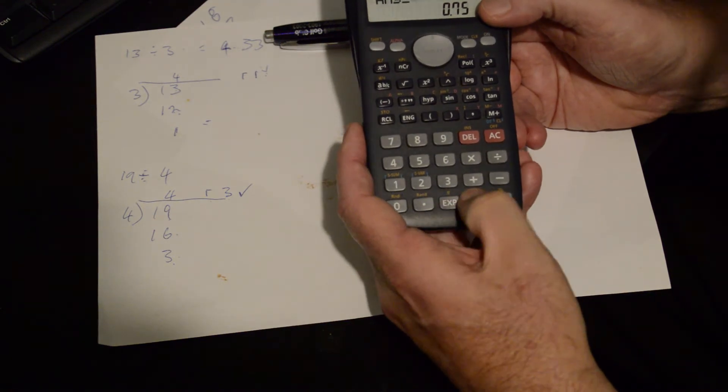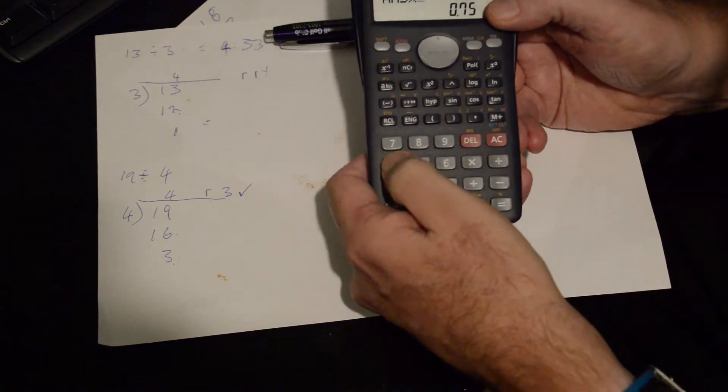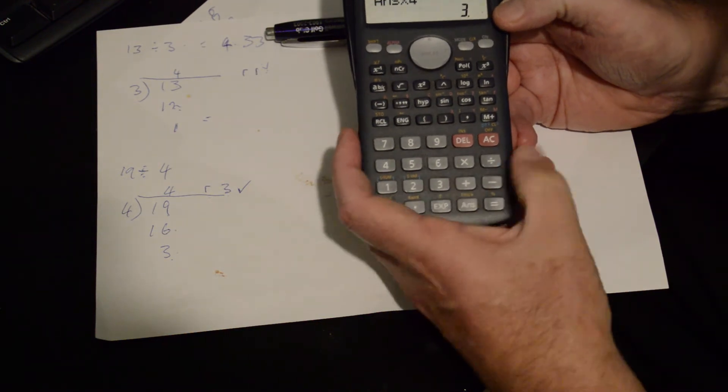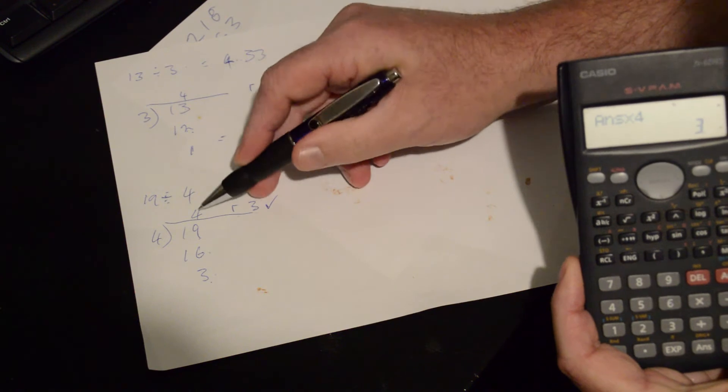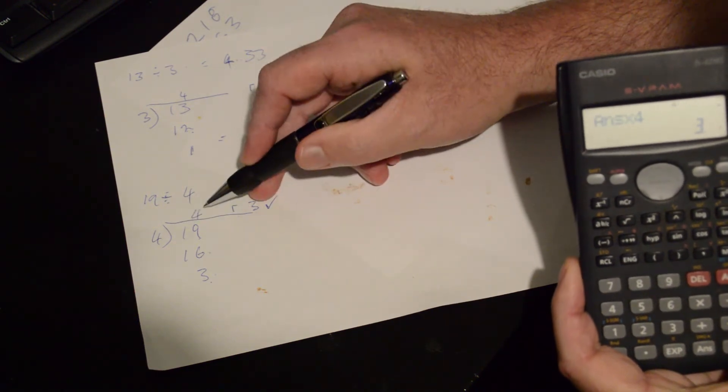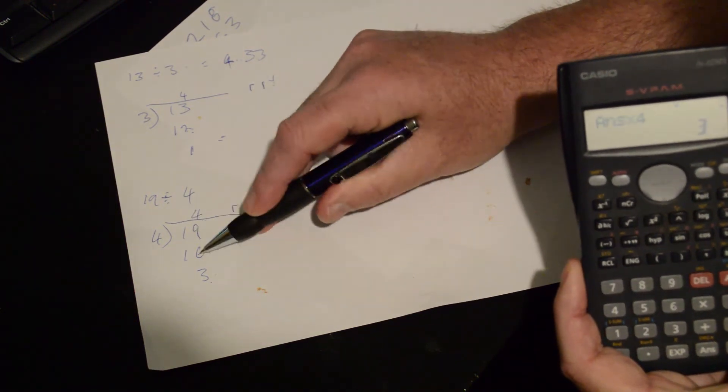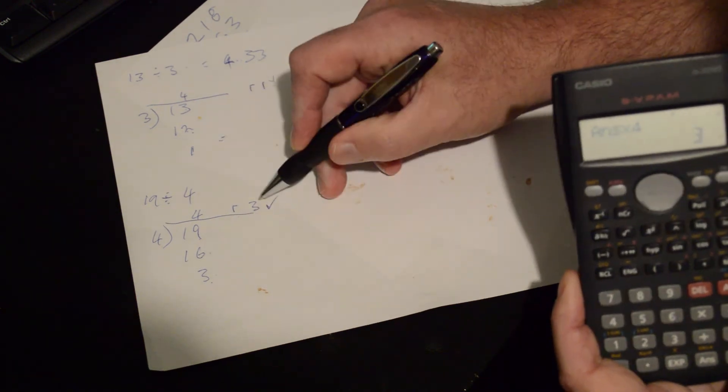So we get the answer, we go times 4 and we go equals. So we've got 3. So here we've got a remainder of 3. We've got 4 fours is 16. 19 minus 16 is 3, remainder 3.